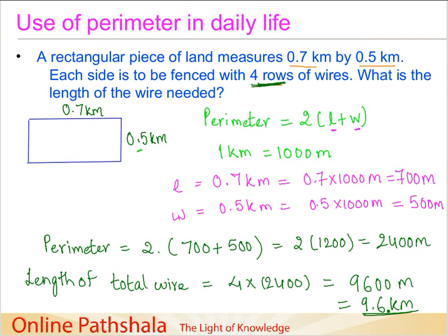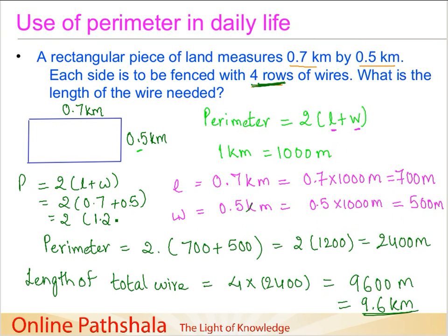We can convert it back to kilometers as well. If you are comfortable adding decimals, you do not need to convert to meters. You can straight away write the perimeter P as 2 times (0.7 + 0.5). Adding 0.7 and 0.5 gives 1.2, so we get 2 times 1.2, which is 2.4 kilometers — the same as 2400 meters. Then, since we need to go around 4 times, we multiply 2.4 by 4, giving 9.6 kilometers.